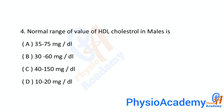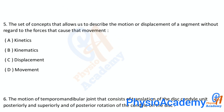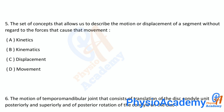Question number four: Normal range of value of HDL cholesterol in males is: A) 35 to 75 mg/dL, B) 30 to 60 mg/dL, C) 40 to 150 mg/dL, D) 10 to 20 mg/dL. The correct answer is option B: 30 to 60 mg/dL.